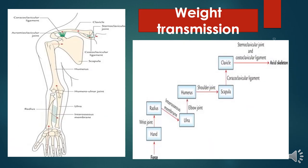This figure shows how weight is transmitted from the appendicular skeleton to the axial skeleton. Force held in the hand transfers to the radius through the wrist joint; from the radius it passes through the interosseous membrane to the ulna; then through the elbow joint to the humerus; through the shoulder joint to the scapula. Laterally, the coracoclavicular ligament transmits weight from the scapula to the clavicle, and from the clavicle through the sternoclavicular joint and costoclavicular ligament the weight is finally transmitted to the axial skeleton.